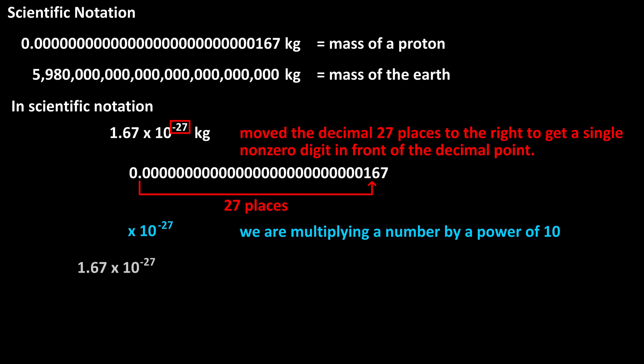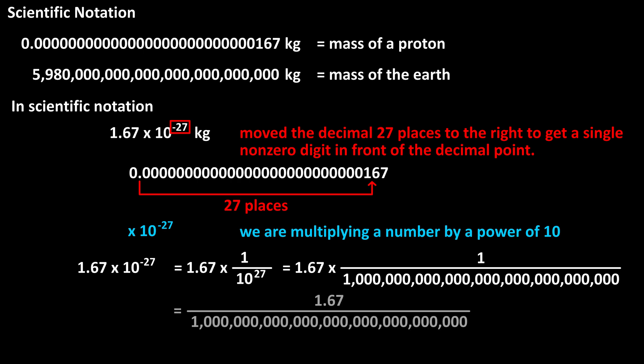So the expression 1.67 times 10 to the negative 27—if we do the actual math, we have 1.67 times 1 over 10 to the 27, because a negative exponent means you put 1 in the numerator and the actual number in the denominator of the fraction, and the exponent becomes positive. 10 to the 27 equals this number, and we have 1.67 over this number, which equals our original number for the mass of a proton.